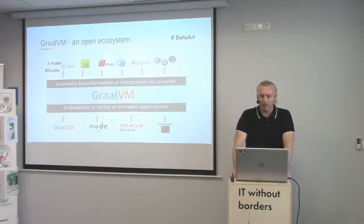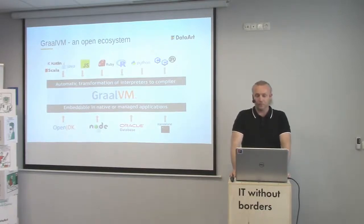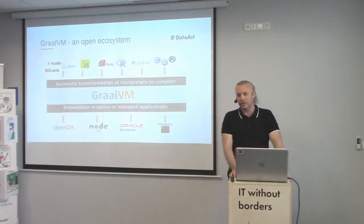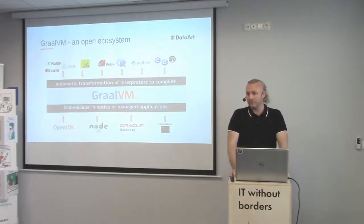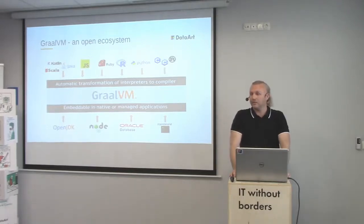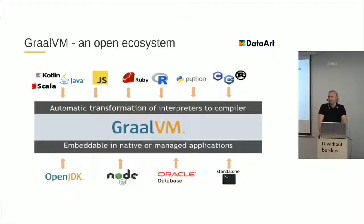GraalVM is an open ecosystem and it's possible to use GraalVM in OpenJDK. At the moment, OpenJDK contains one component from GraalVM — its just-in-time compiler — available starting from version nine of OpenJDK. It's still experimental, so you have to explicitly specify that you want to use it. But in the last two weeks, Oracle Labs released the version 19 edition of GraalVM, and as they say, it's a stable release possible to use in production.